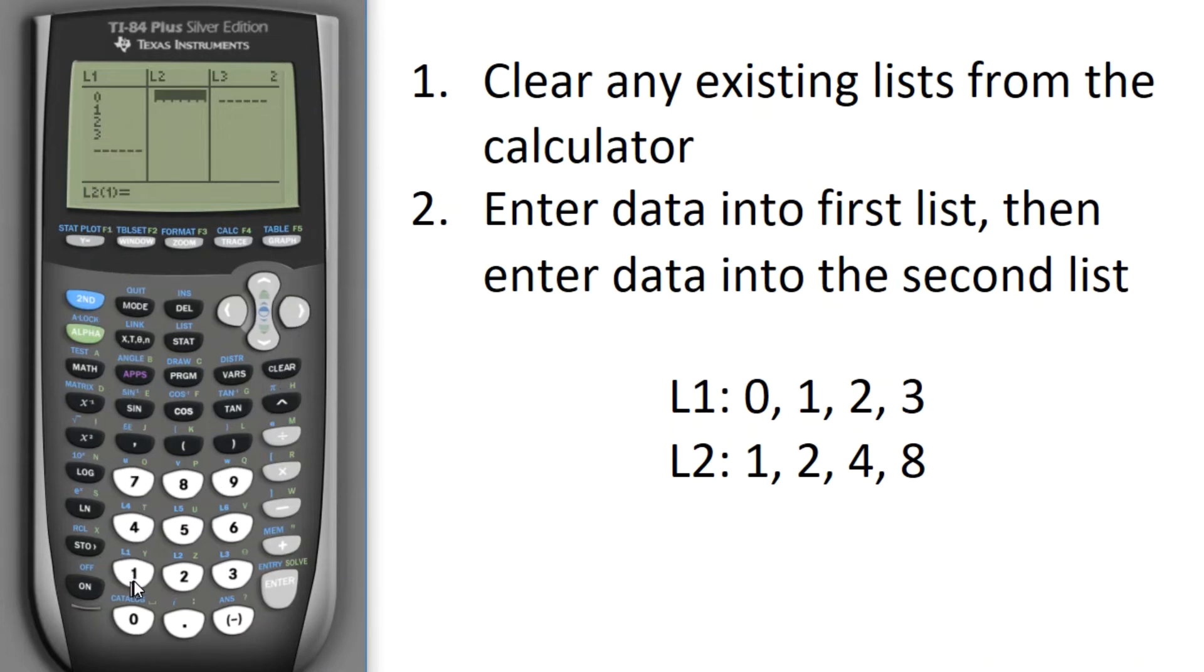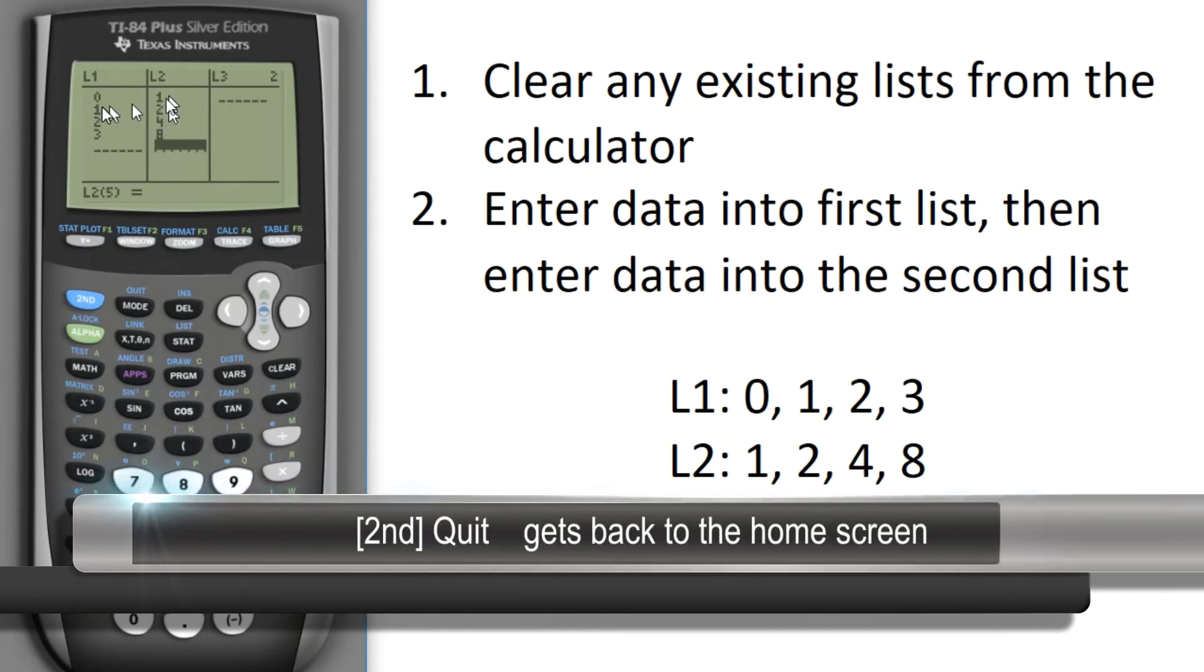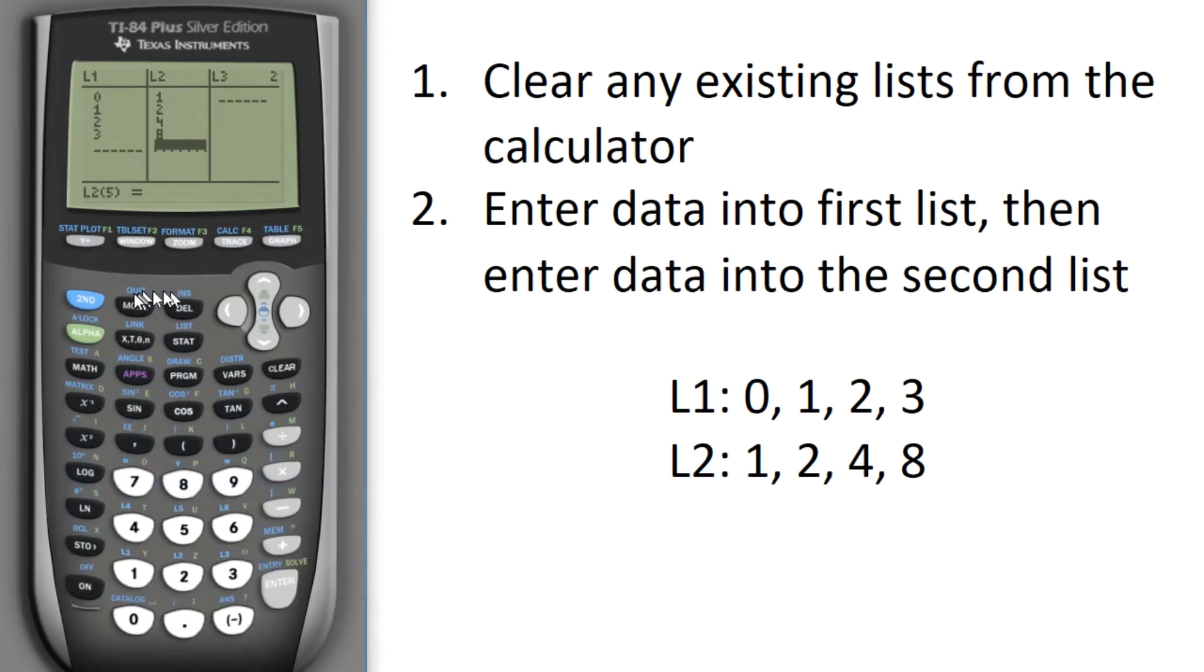List 2 item 1 is the number 1, list 2 item 2 is the number 2, list 2 item 3 is the number 4, and finally I'm going to put in 8 for list 2 item 4. I can just sort of visually inspect that and see that I've entered my data into list 1 and list 2. To get back to the home screen I always hit 2nd quit.